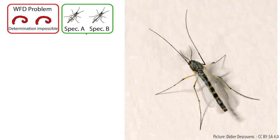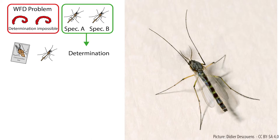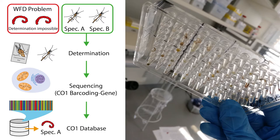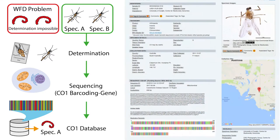Adult specimens, however, can often be identified reliably to species level by taxonomic experts. Using a small genetic marker, the CO1 barcode, we can sequence those well-identified specimens and deposit them in a reference database.